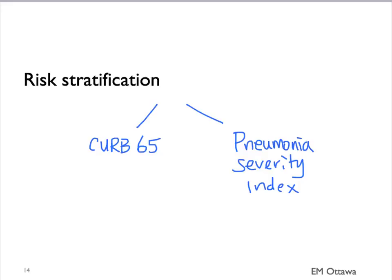The first one is called CURB65 and the other one is called the Pneumonia Severity Index. On the blog, under other resources, you will see both of these discussed in details by other sites.